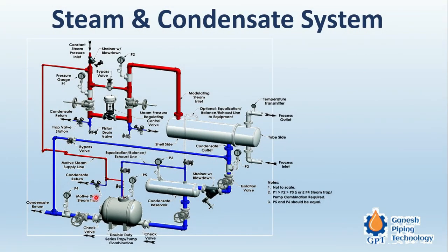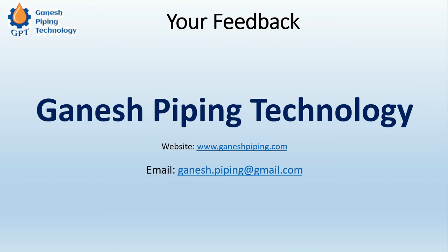In the system we can see a steam line, a control valve, and a condensate collection drum. This condensate is again used for steam generation because it has a very high heat content. The same condensate is pumped back to the boiler, which increases the efficiency of the boiler. This is the overall picture of steam piping.